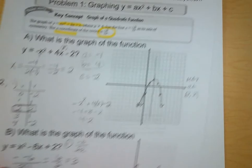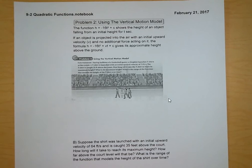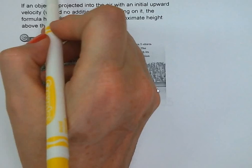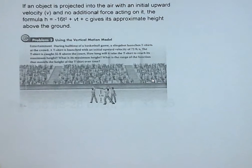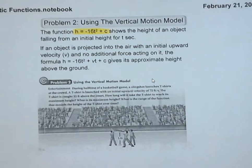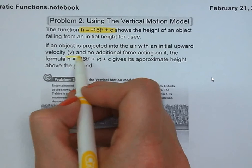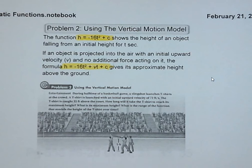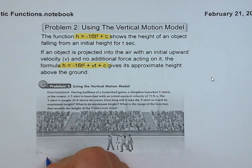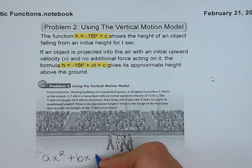For problem number 2, we're going to be working on applying these models. For this model, when something's just being dropped, we use negative 16t squared plus c where c was the height. But this time we're launching an object into the air and then gravity is pulling it back down. So we need to use the equation h equals negative 16t squared plus vt plus c, where v is its upward velocity.